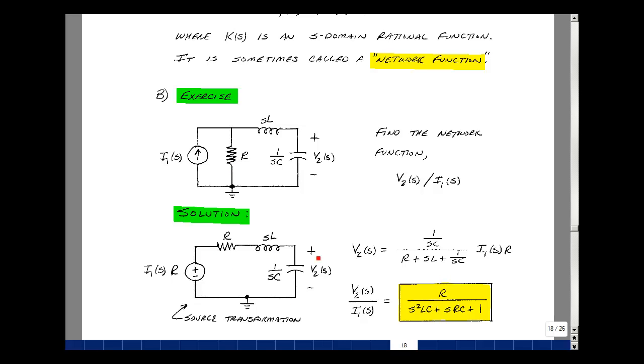Now I could use a voltage divider. So the voltage across this capacitor is the impedance, 1 over sC, divided by the sum of the impedances, which would be r, sL, plus 1 over sC, times the voltage across those terminals of the three series elements, and that would be i1 of s times r. Divide by i1, what you're left with is this expression times r.